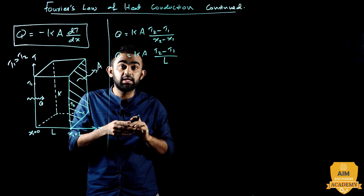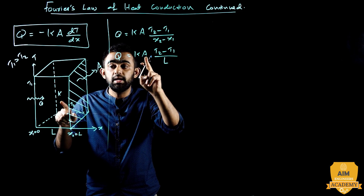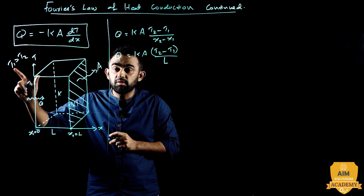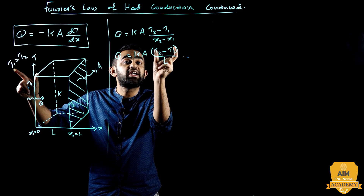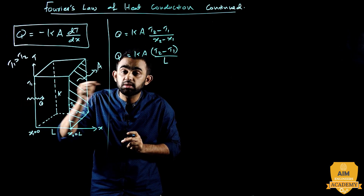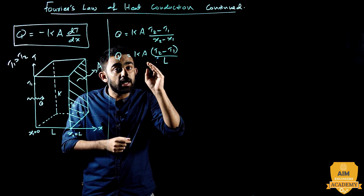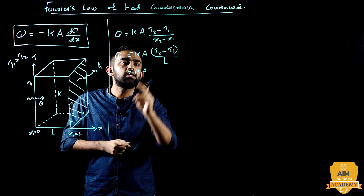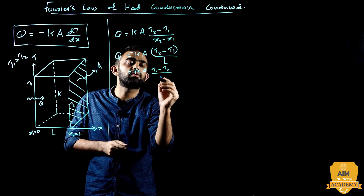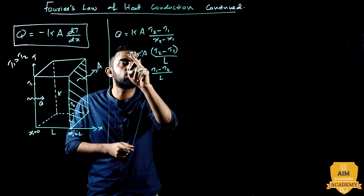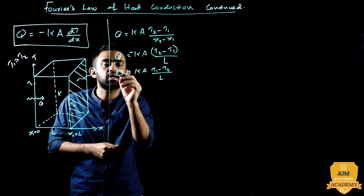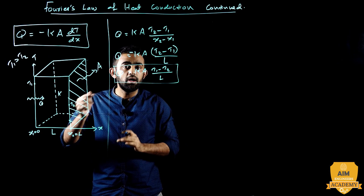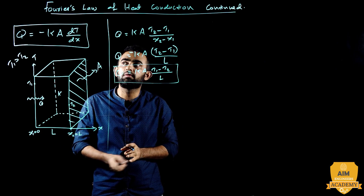Fourier's law in the positive direction of heat flow gives: K is a material property, it's constant. But T2 minus T1 is negative because T1 is greater than T2, so the result is negative. Heat is flowing in the positive X direction, yet the equation gives a negative value — a contradiction. So we add an extra negative sign, making Q equal to K times A times (T1 minus T2) divided by L. The negative term T2 minus T1 becomes positive, consistent with positive direction heat flow.